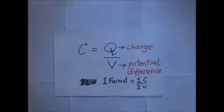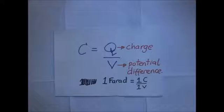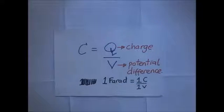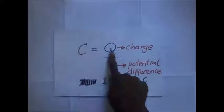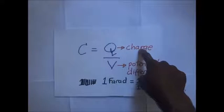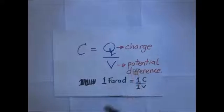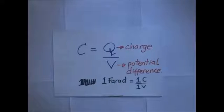The capacitor has the capacity to store energy in the form of an electric charge, thereby producing a potential difference across its plates. You can think of a capacitor as more like a small rechargeable battery. By applying a voltage to a capacitor and measuring the charge on the plates, the ratio of the charge Q to the voltage or potential difference gives the capacitance value, given as: capacitance equals Q divided by the potential difference across the plates.